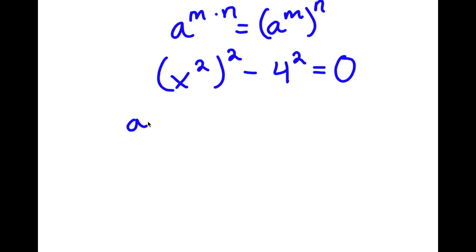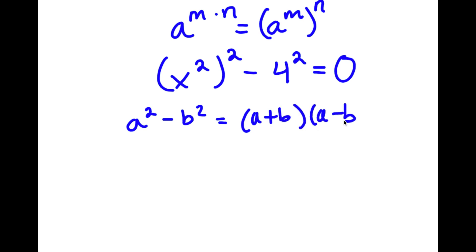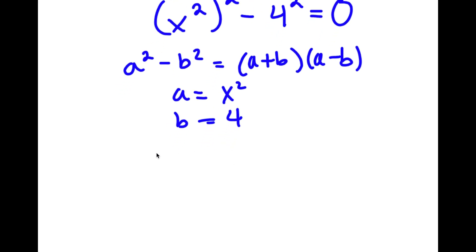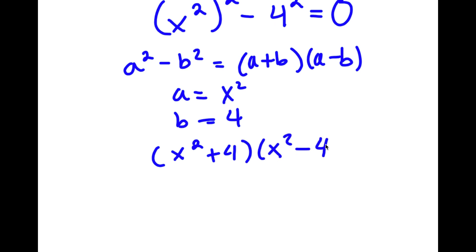Now, if I have something in the form a squared minus b squared, this is equal to a plus b times a minus b. So in this case, a is x squared and b is 4. So now I have x squared plus 4 times x squared minus 4 is equal to 0.